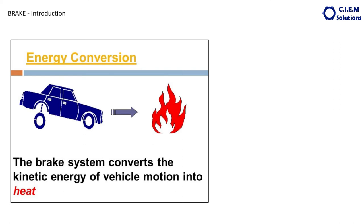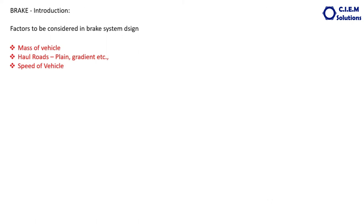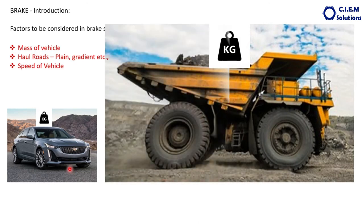In automobiles, the brake system converts kinetic energy — that is the motion of the vehicle — into heat. Whenever you apply the brake, the kinetic energy is converted into heat. The factors to be considered while designing a brake system are: the mass of the vehicle, the type of roads (haul roads, highways, or mine roads), and the speed of the vehicle for which it is designed. These three factors must be considered in brake system design.